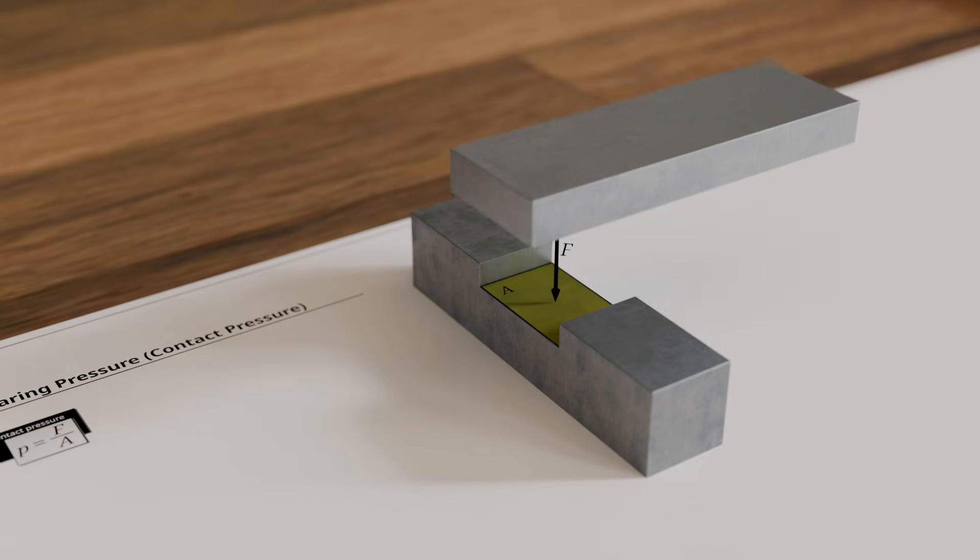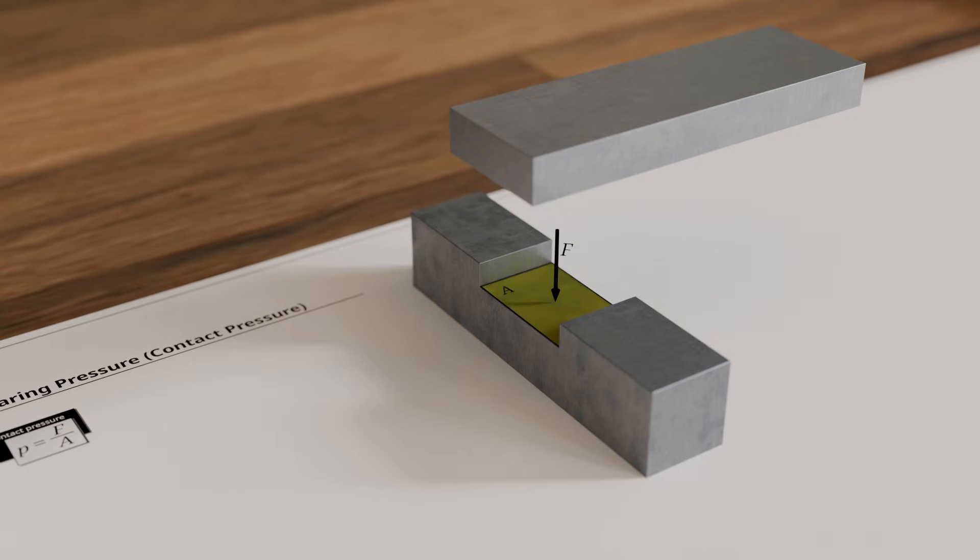When a component rests in a recess, force is also transmitted through the contact surface. The distribution of force per unit area between two contacting surfaces is referred to as contact pressure or bearing pressure.